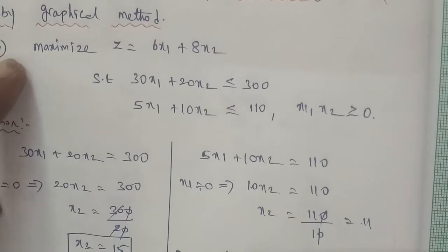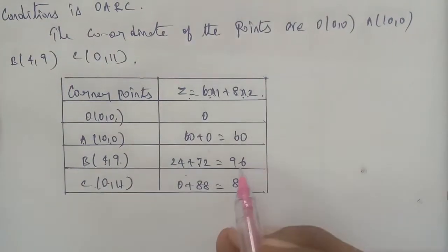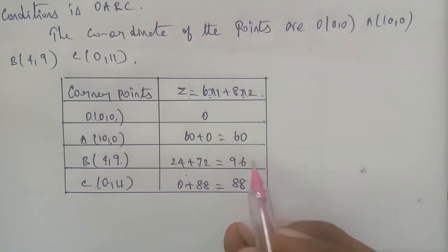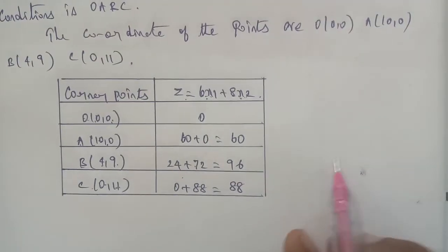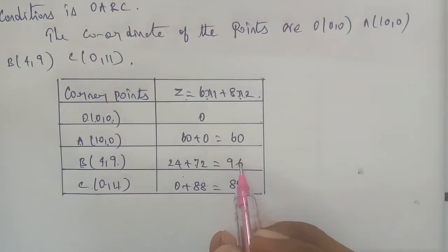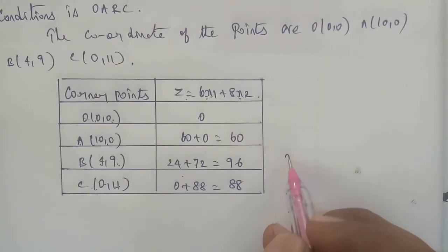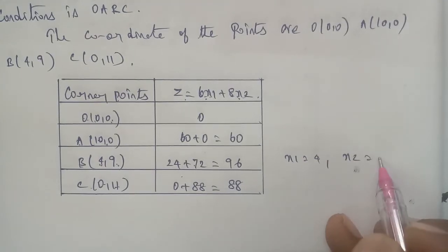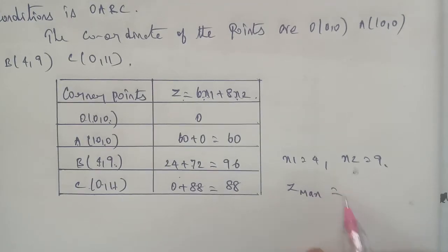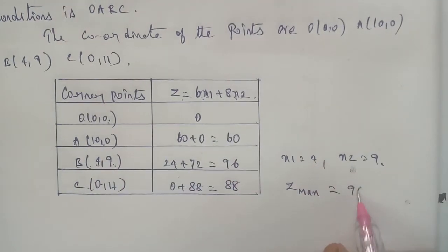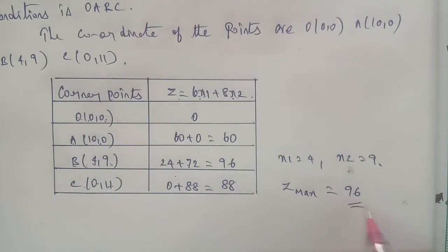We will find the maximum value. The maximum number is 96. At point B which is (4, 9), Z reaches its maximum. Therefore x1 is equal to 4 and x2 is equal to 9. Therefore the maximum value of Z is 96. Thank you.